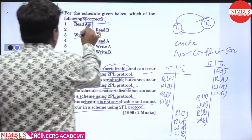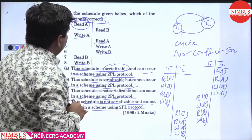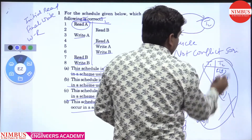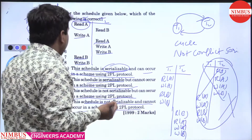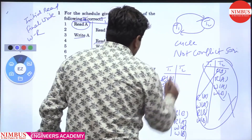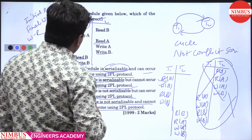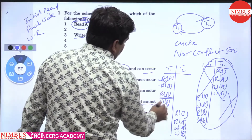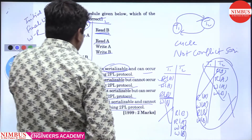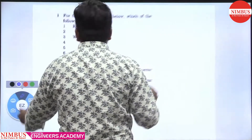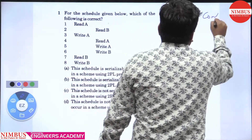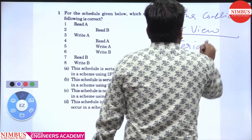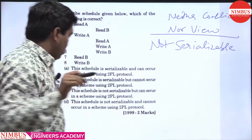Checking the first condition — initial read on A: in the original schedule, T1 performs the initial read on A. But in the T2-first serial schedule, T2 performs the initial read on A — that is wrong. For data item B: initial read on B is performed by T2 in the original, but by T1 in the serial schedule. So this is also not view serializable. Therefore, the schedule is neither conflict serializable nor view serializable — meaning it is not serializable.